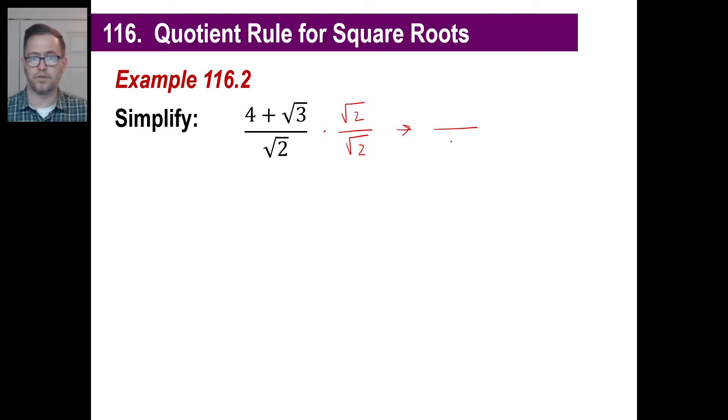So you know what happens in the bottom. The denominator you're going to turn into is 2. Square root of 2 times square root of 2 is just the square root of 4, which is 2. So we have 4 times the square root of 2 up top. And then we have the square root of 3 times the square root of 2, which is going to be the square root of 6. And that's it. The 2 is a rational number.